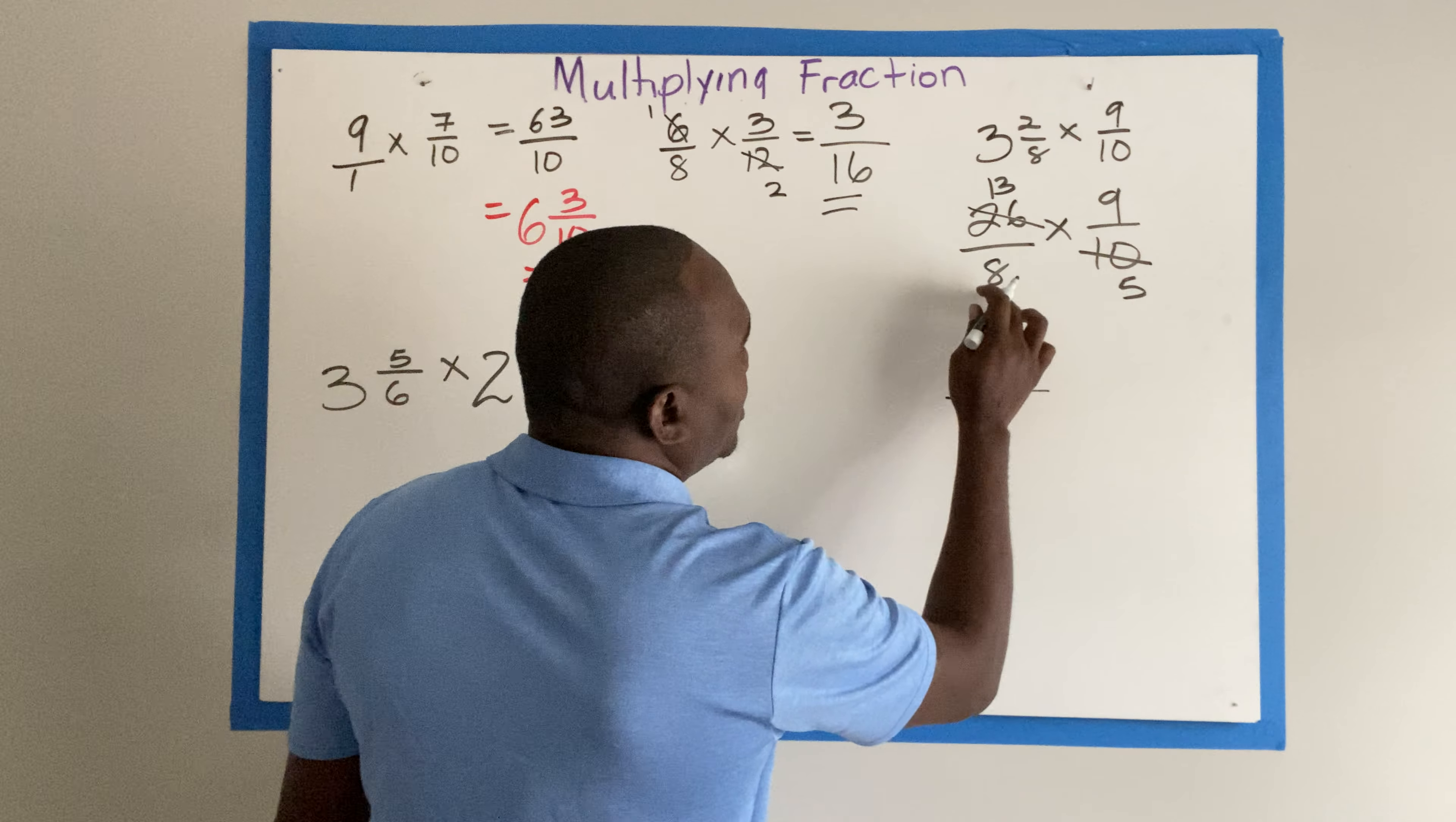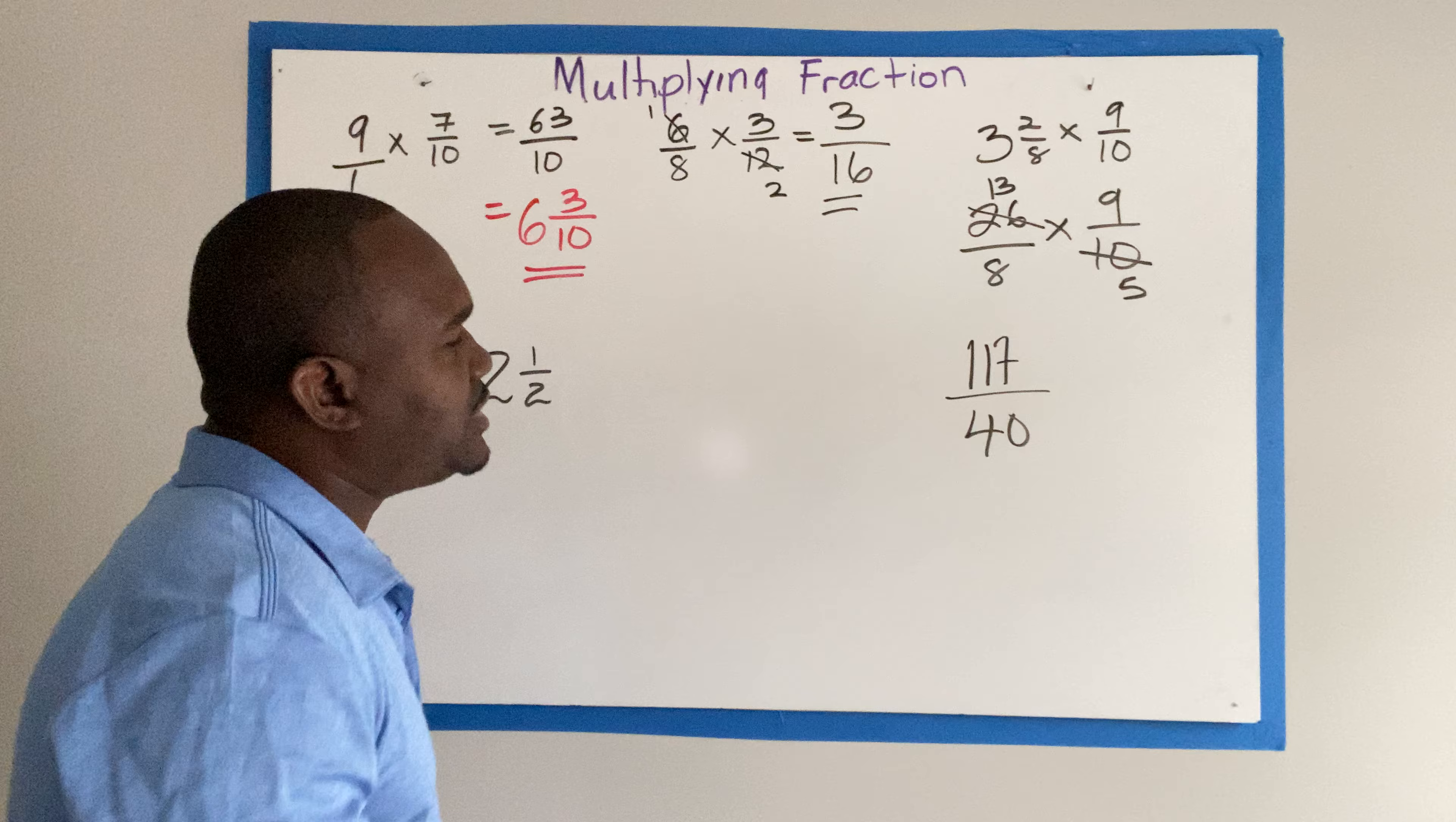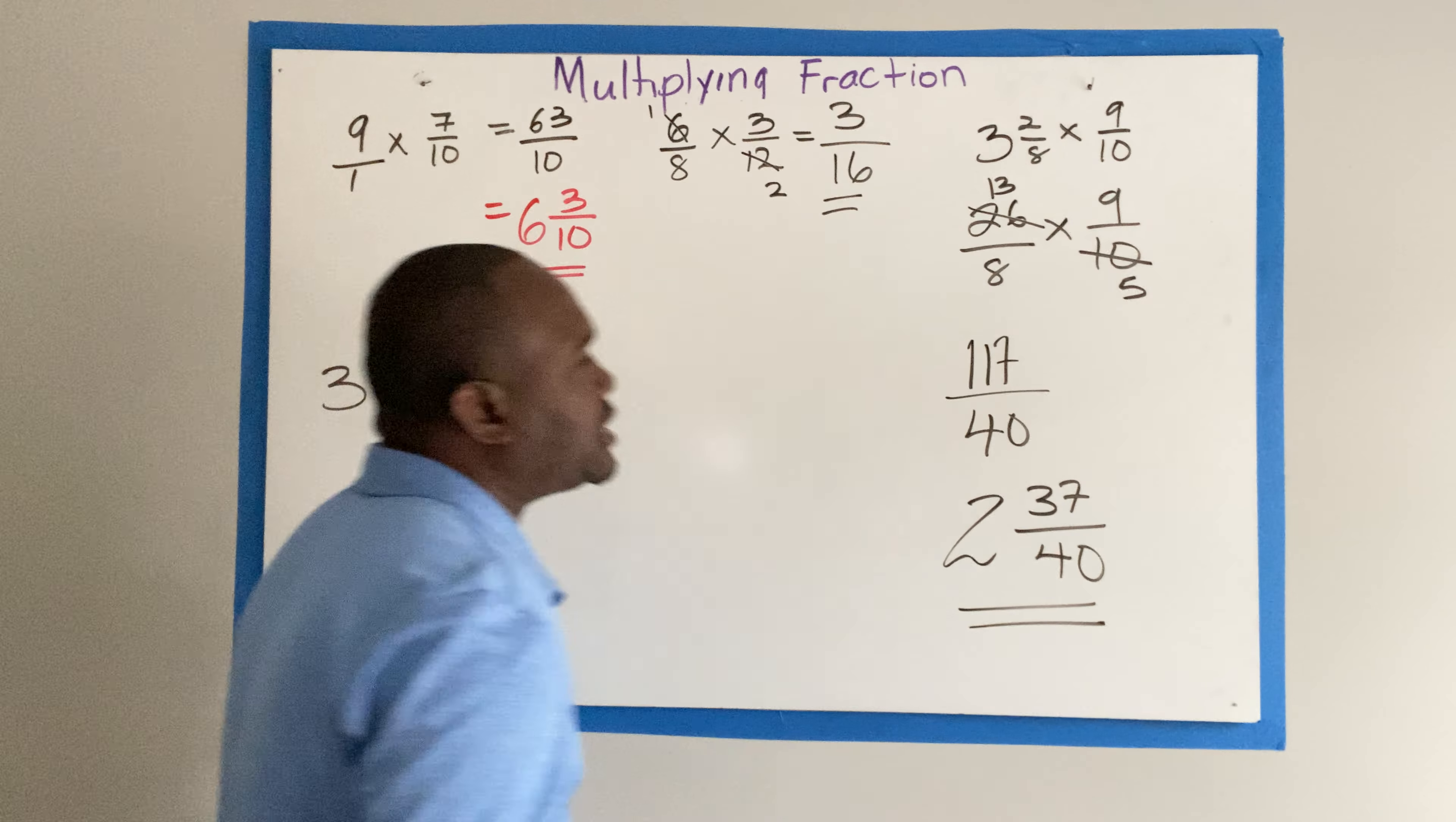Over 8 times 5 will give us 40. That's an improper fraction, so we need to write that as a mixed fraction. So 40 into 117 goes 2 times. That's a whole number. And remainder 37 over 40. And that's our final answer.